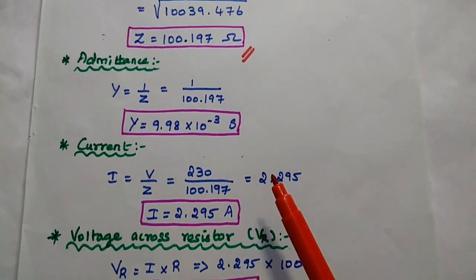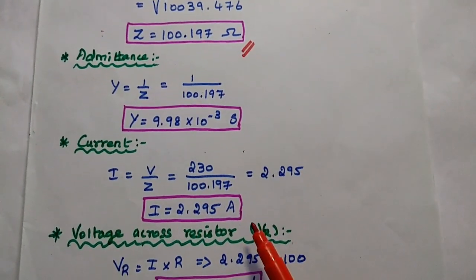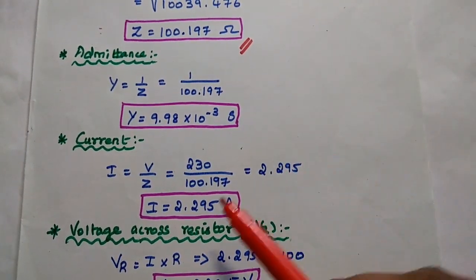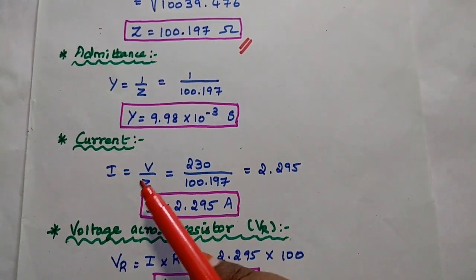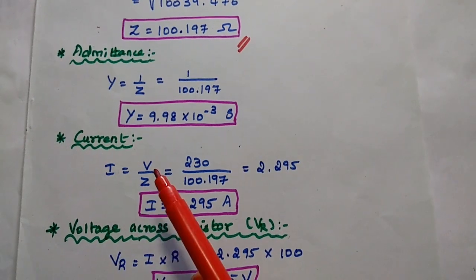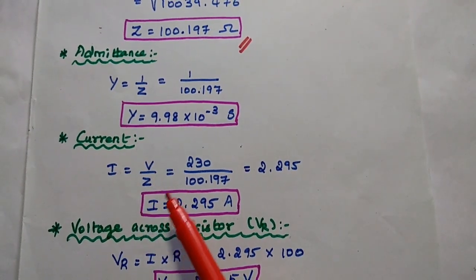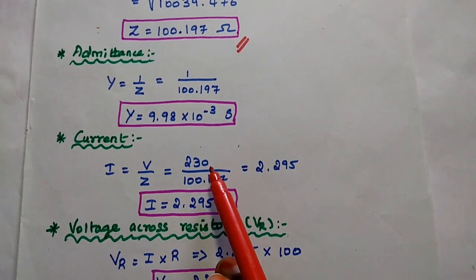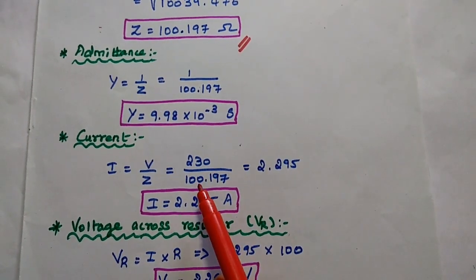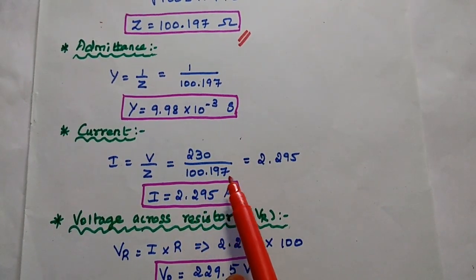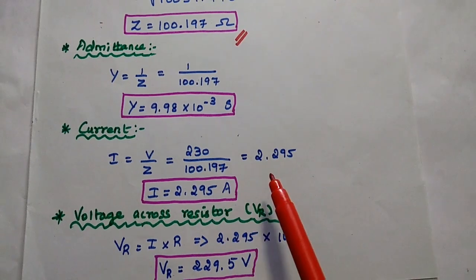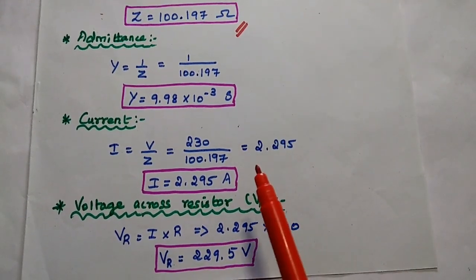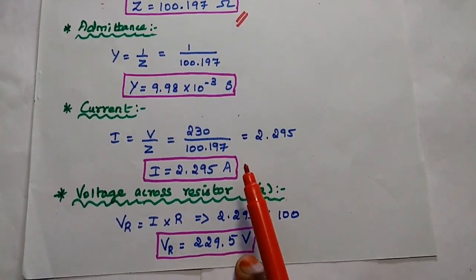Next one is current. Here we can use Ohm's law, that is I is equal to V by Z, where Z is the impedance. So I is equal to V by Z, that is 230 volt divided by 100.197. The answer is 2.295 ampere.